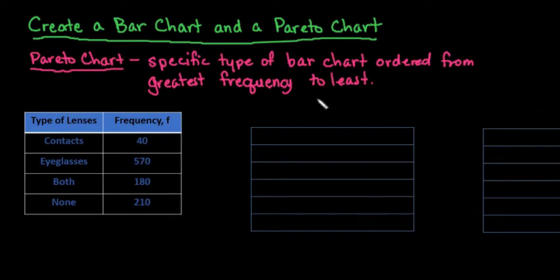Both of these types of displays are used for categorical or qualitative data. This is data that you can't really do math with. All you can do is counts. A bar chart is different from a histogram in the fact that it has spaces in between each of the bars. A histogram, the only spaces or gaps that you should have is if you have zero in there. A Pareto chart is a specific type of a bar chart where you order the data from the greatest frequency to the least.